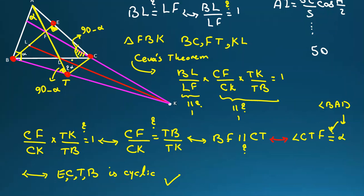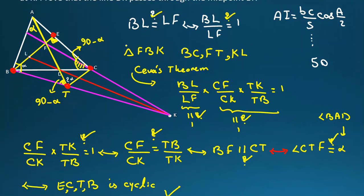And then we can say, okay, it is correct. Then CTF equal to alpha. Then it is correct. It is correct. It is correct. This one is okay. This one is okay. So we've proved BL equal to LF.